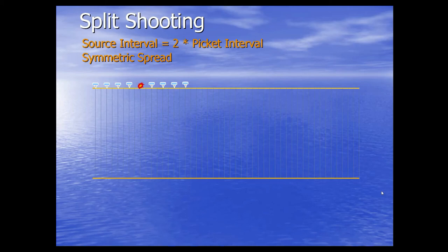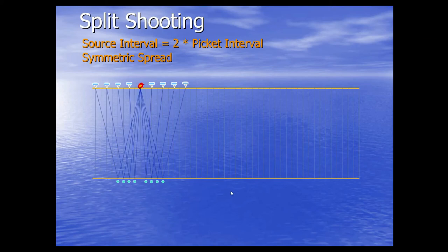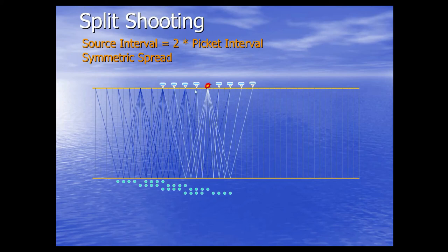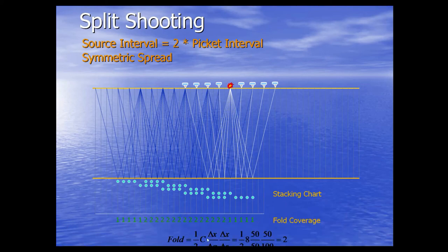The second type is split-spread shooting with the picket interval set to 2 times the picket interval. We fire the shot, the wave goes into the subsurface, reflects back from the reflector, and is recorded by the receivers. We record the common midpoint, then the same happens for the second shot and so on. In this case, our fold is minimum — this is a two-fold dataset, calculated based on the acquisition geometry.